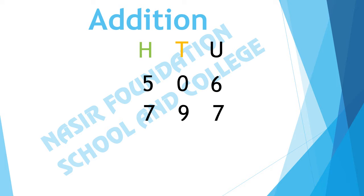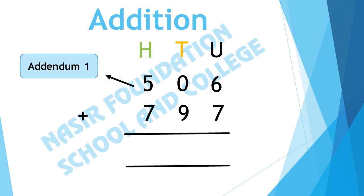Addition. As there are 2 numbers shown, we will add them and we will write them in place value chart of hundreds, tens and units. We will use addition symbol. Number first that we are adding is called addendum 1 and the second number is called addendum 2.